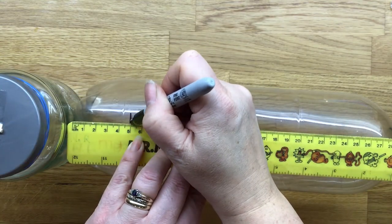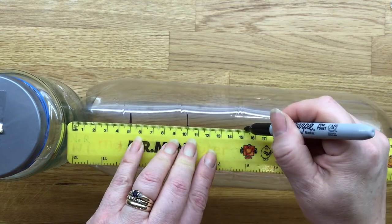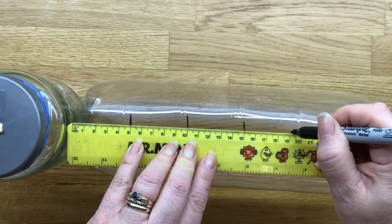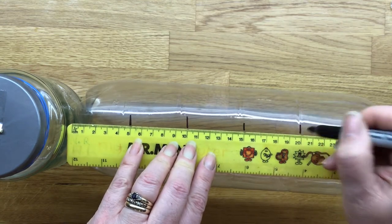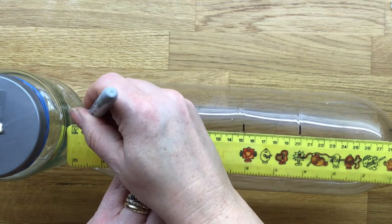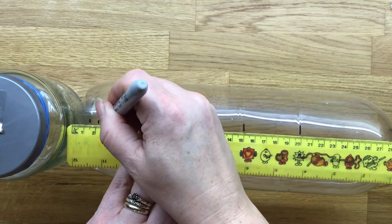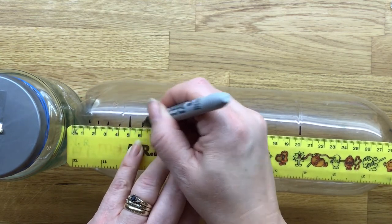On your bottle measure out five centimetre intervals going up to 20 centimetres. Once you've drawn those on then you can measure in the single one centimetre markers just as I'm doing here.